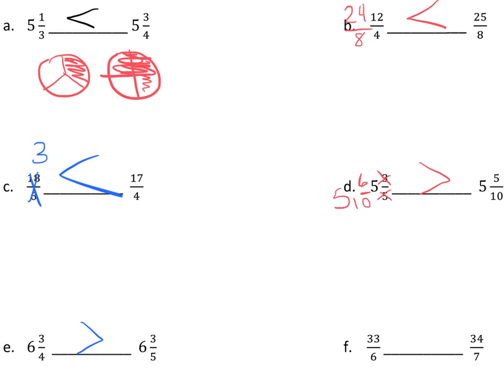And then for F, I'll do one last one. We have 33 sixths versus 34 sevenths. I would divide in this situation as well. 6 goes into 33 five times. 7 goes into 34 four times. So 5 and something is more than 4 and something. So therefore, this is bigger. And I would say exactly what I just said. In words, I would put 6 goes into 33 more than 7 goes into 34. That's enough.